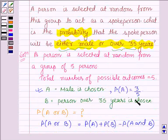And probability of B, that is, a person over 35 years is chosen is 2 upon 5 since there are two persons.